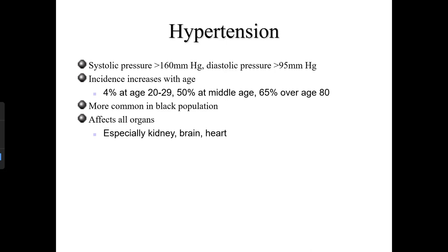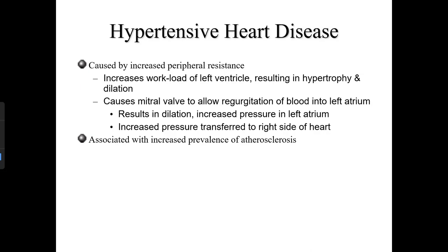High blood pressure affects all organs. Using the garden hose analogy again: if water pours slowly on rocks, they wash off nicely, but if you spurt water at them it blasts them apart. Similarly, increased blood pressure can blow out capillary beds, impact blood flow and nutrient exchange at tissue sites, and cause significant tissue damage.